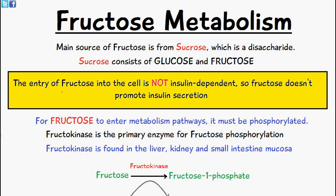Glucose, on the other hand, is insulin dependent, so high levels of glucose in the blood promote insulin secretion. This is because it's detected by the beta cells of the islets of Langerhans, which respond to high blood glucose levels by secreting more insulin into the blood.